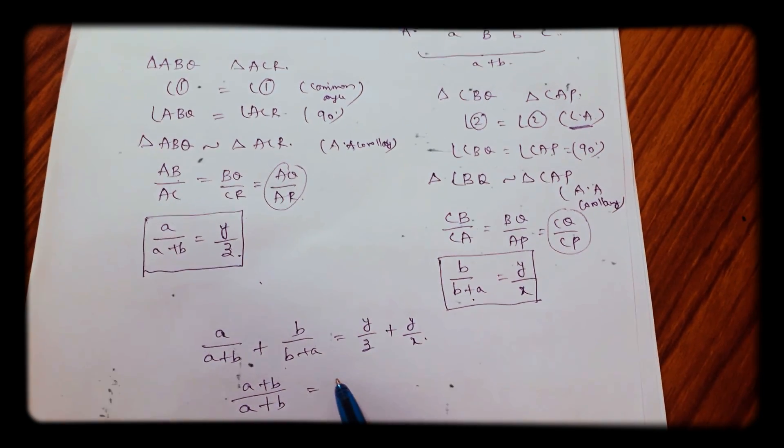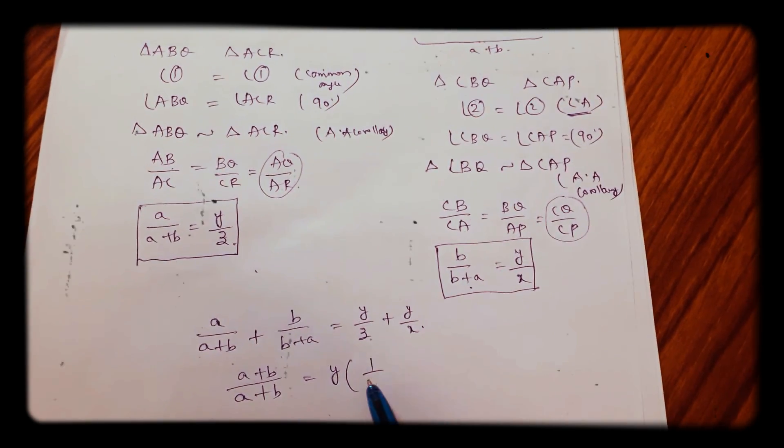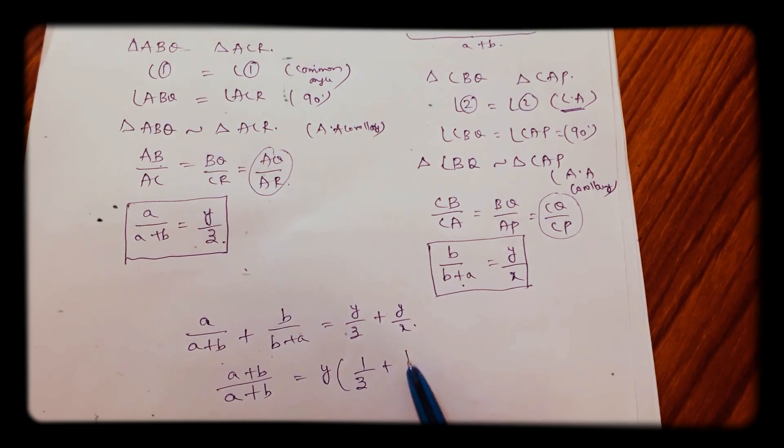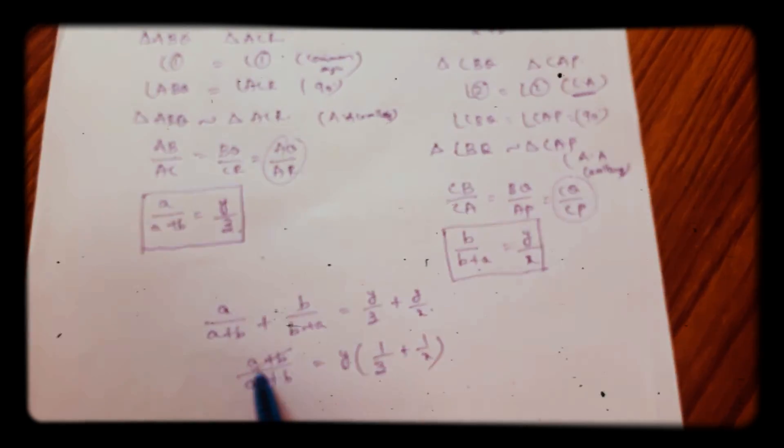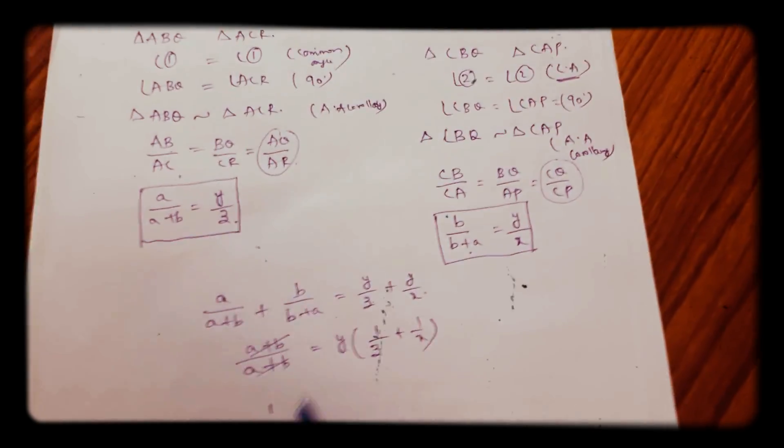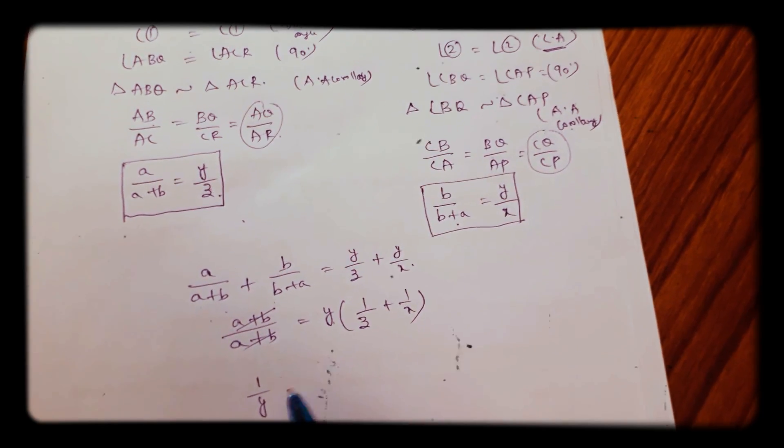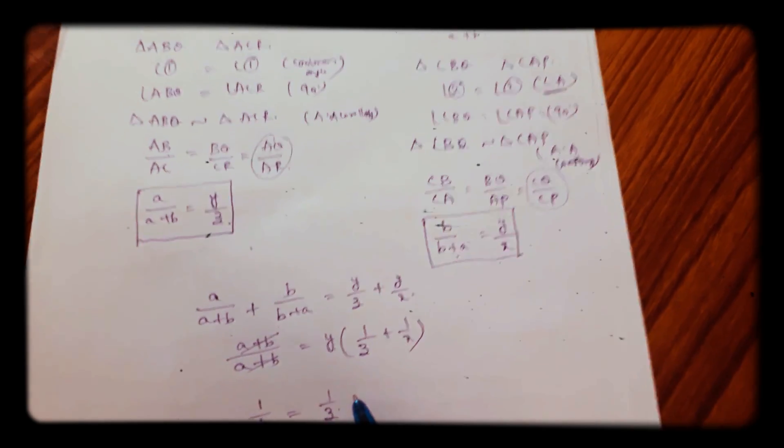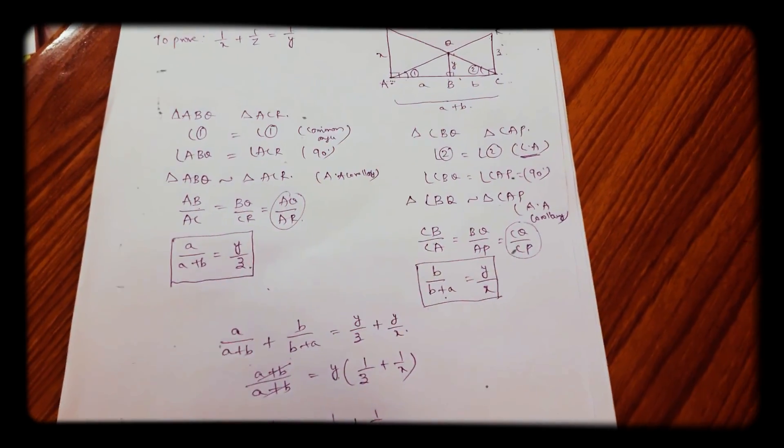Equals Y times (1/Z + 1/X). Here both will get cancelled. If this Y, I'll bring here: 1/Y = 1/Z + 1/X.